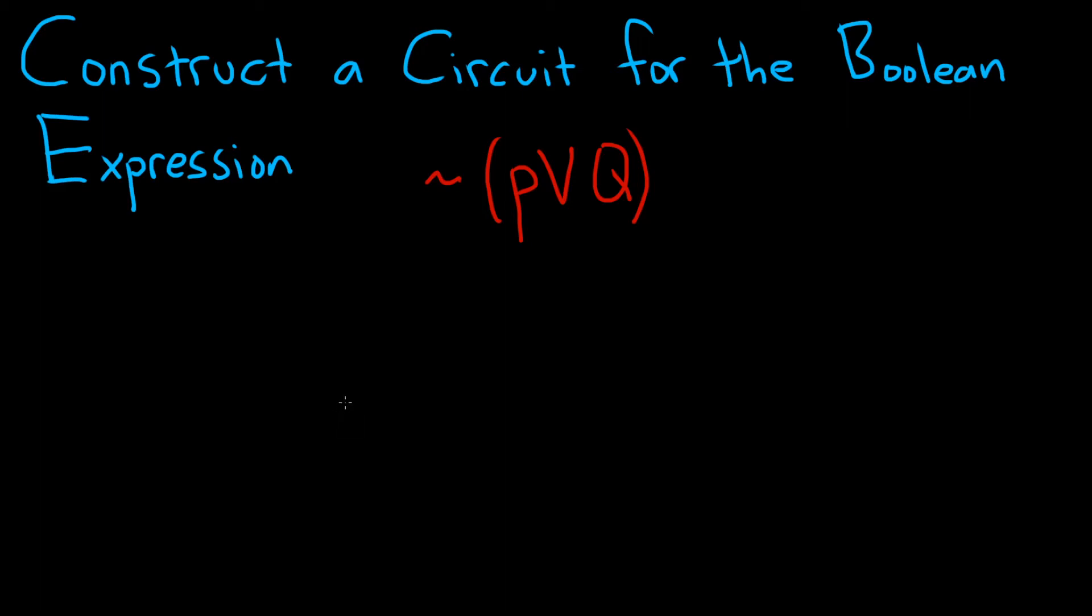In this problem we have to construct a circuit for the Boolean expression. The way to do this is to start with the outermost operation and write that gate on the far right.